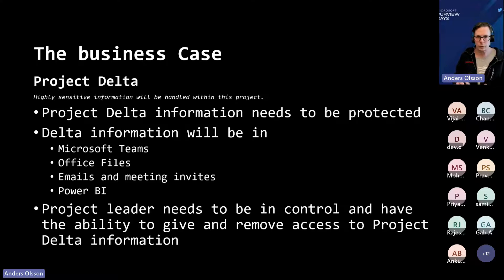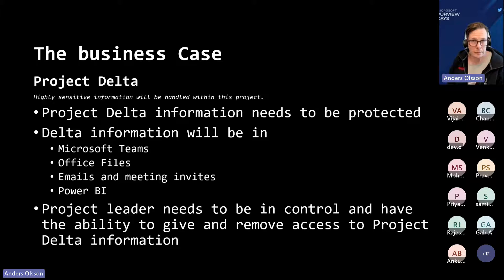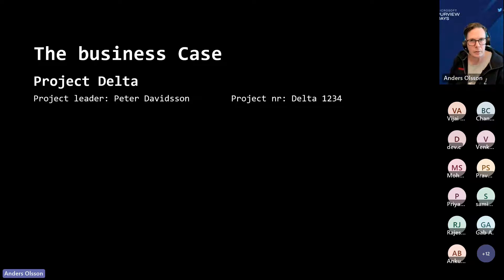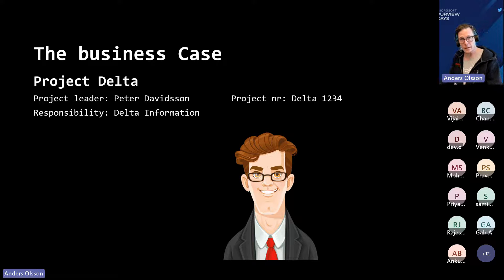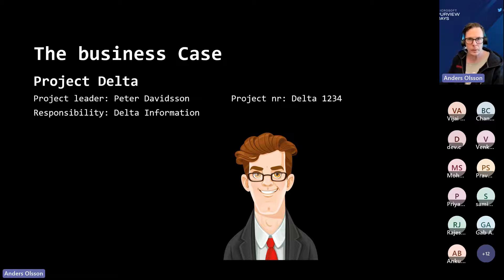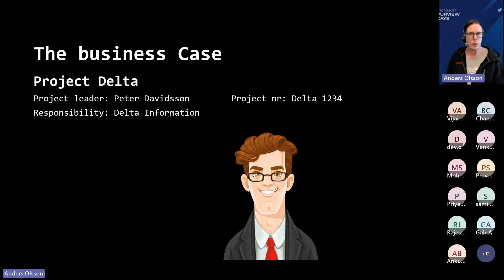They need to use Power BI to explain things in the project, and of course this needs to be protected as well. And this needs to be easy to use. The project leader is responsible not only for the project, but also for protecting the information. So let me introduce the project leader. His name is Peter Davidson, and he also has a project number. Peter is responsible for the project and for the information. We have done a lot of things in the backend to support Peter and his project — this needs to be easy to use. Peter needs to do all his tasks without calling the service desk.